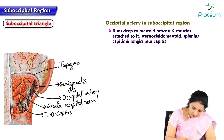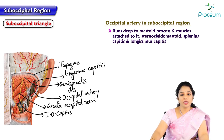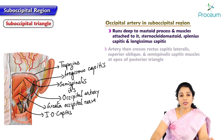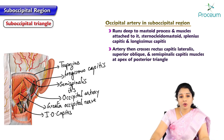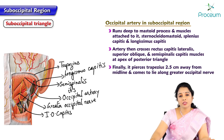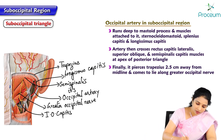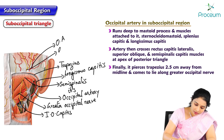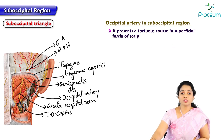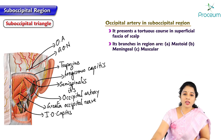This is splenius capitis and here is longissimus capitis. This artery is present almost at the apex of the posterior triangle of the neck. The artery crosses the rectus capitis lateralis and superior oblique muscle and semispinalis capitis muscles at the apex of the posterior triangle of the neck. Finally the artery pierces the trapezius, about 2.5 centimeters away from the midline, and comes to lie along the greater occipital nerve. This occipital artery runs along with the greater occipital nerve and presents a tortuous course in the superficial fascia of the scalp. Its branches include mastoid branches, meningeal branches, and some muscular branches.